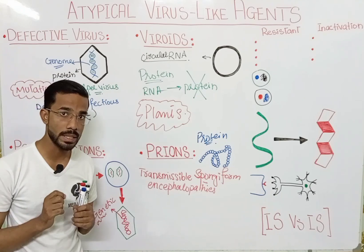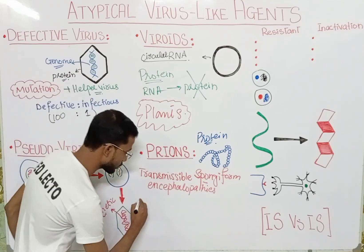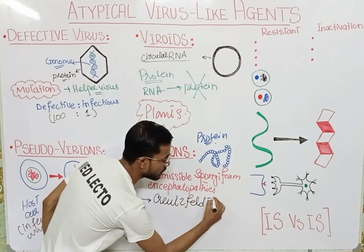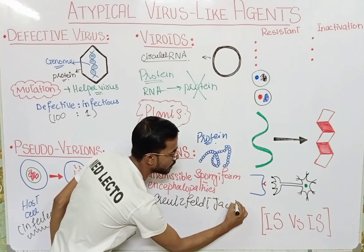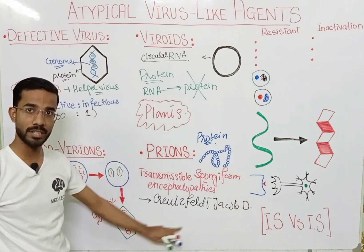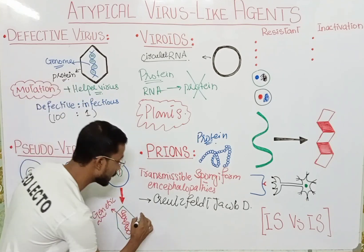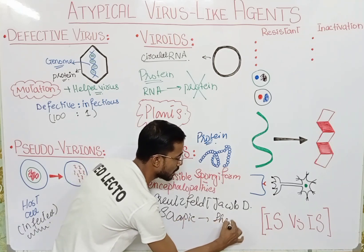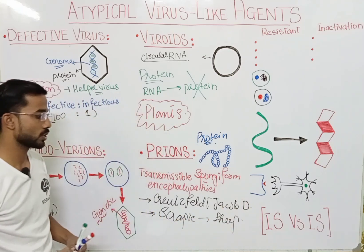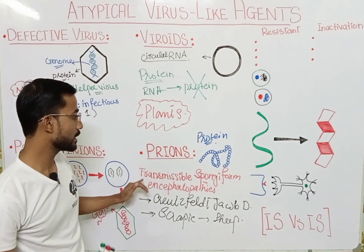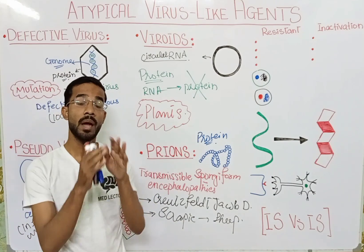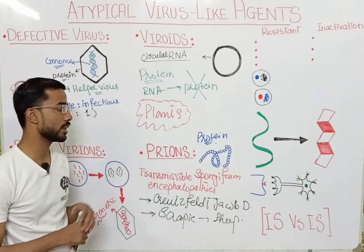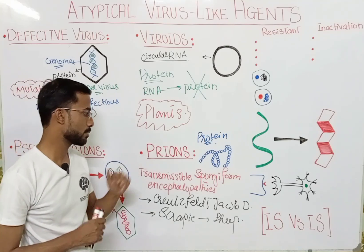You will see two most important diseases. The first is Creutzfeldt-Jakob disease, which is seen in humans. The other is scrapie, which is seen in animals like sheep. These are two most important transmissible spongiform diseases in which the brain actually looks like a sponge — that is why it is called transmissible spongiform encephalopathy.